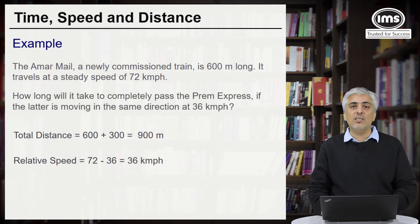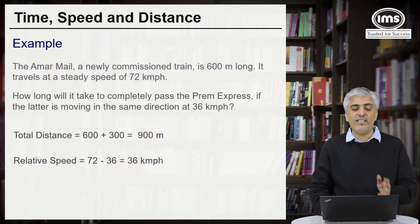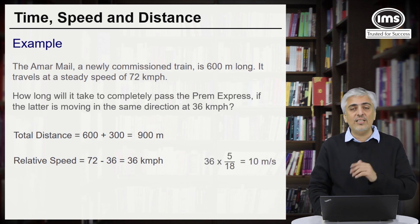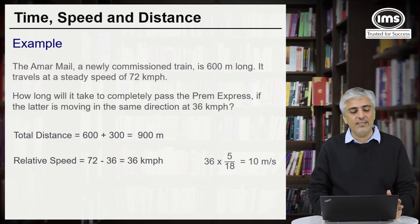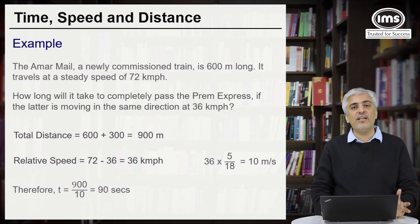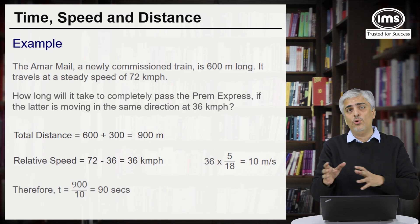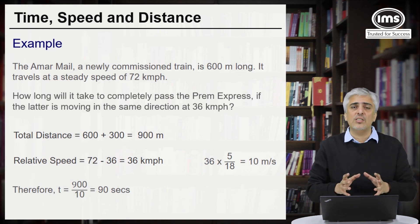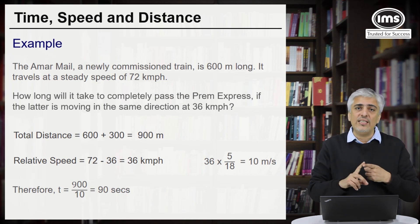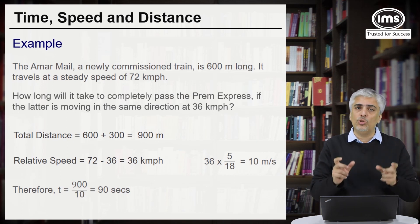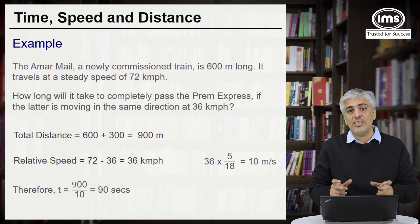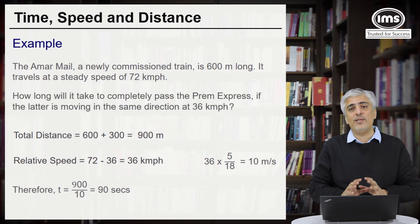Relative speed = 72 minus 36 = 36 km per hour, since they are moving in the same direction. Converting: 36 × 5/18 = 10 meters per second. Time taken = 900 divided by 10 = 90 seconds. To summarise: if there are two bodies travelling, take the length of both bodies and use relative speed — that is the whole idea in these questions.